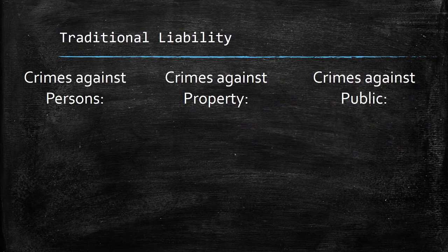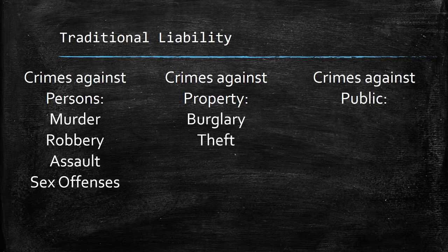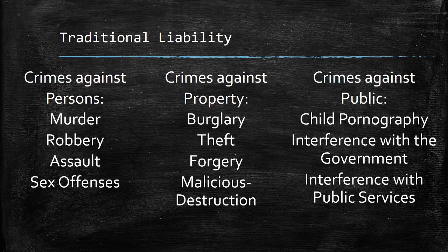Traditional liability includes things like murder, robbery, assault, and sex offenses — grouped as crimes against persons, where an individual is directly harmed or threatened with harm. Crimes against property include burglary, theft, forgery, and malicious destruction — cases where a victim's property interest is harmed. Crimes against the public include things like child pornography, interference with the government, and interference with public services, where public sensibilities or public efficiency are affected. This is not a complete list, just a few examples of traditional liability.